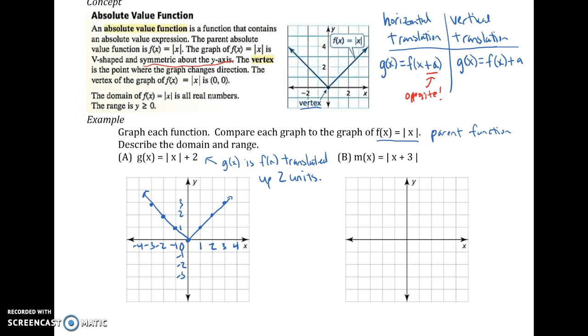So g of x is f of x translated up 2 units or 2 spaces. So that's my description. And then I want to graph it. So then I can take each point, just like I did before, and just literally move it in the way I described. So I'm going to move every point up 2. Whatever will fit on my grid, of course. If it goes off the grid, then we can stop.